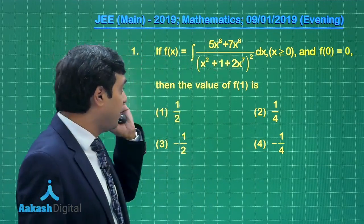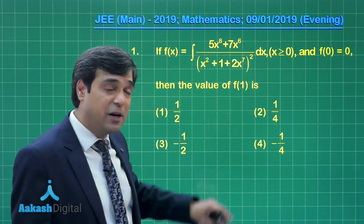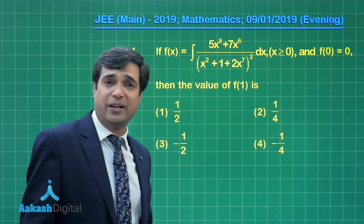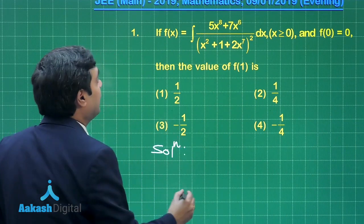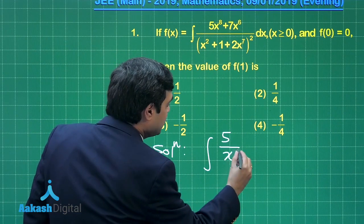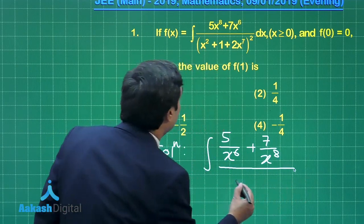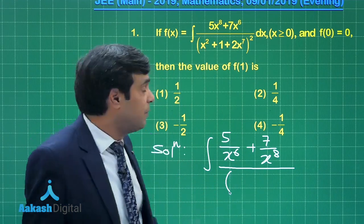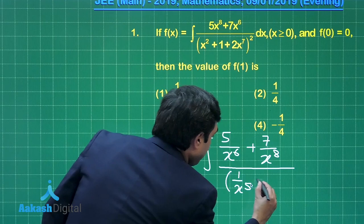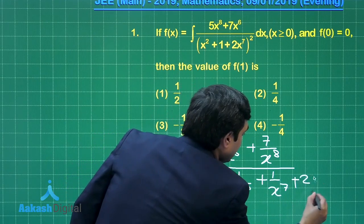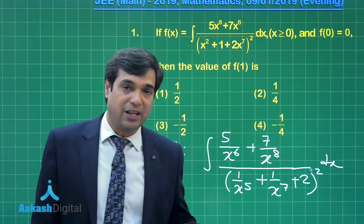When you look at the numerator and denominator you can see the powers are 5 and 7. If I divide this expression by x¹⁴ in both numerator and denominator, let us check what it gives. Dividing by x¹⁴ gives (5/x⁶ + 7/x⁸) in the numerator, and in the denominator taking x¹⁴ common means x⁷ goes inside, giving (1/x⁵ + 1/x⁷ + 2)² dx.